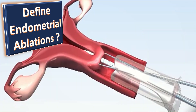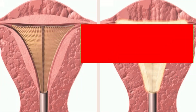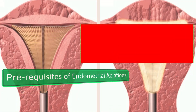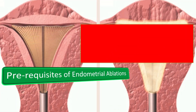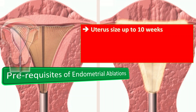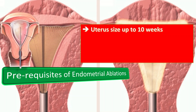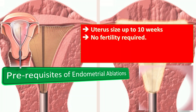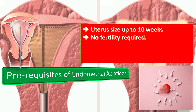The prerequisites of endometrial ablations include, first of all, a uterus size of up to 10 weeks. And secondly, we have to make sure that no fertility is required.